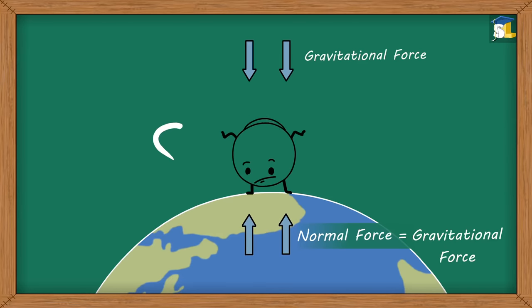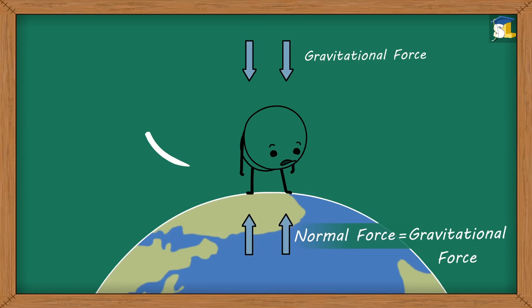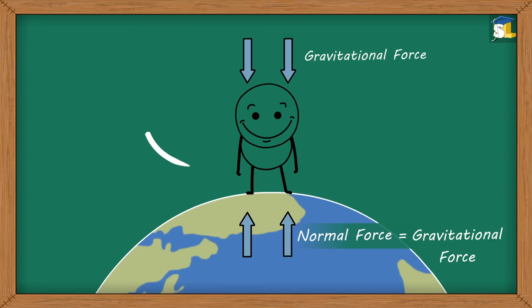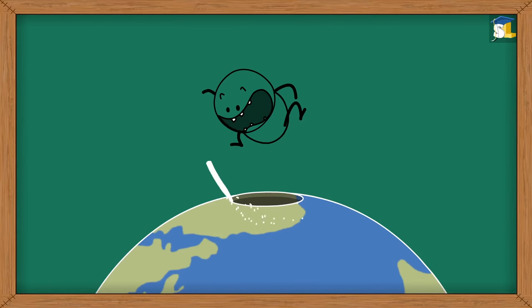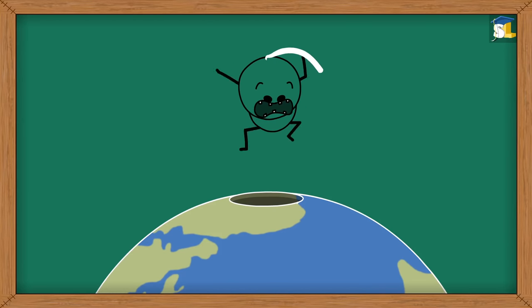Normal force is exerted by a surface only when we are in contact with it. Since these two forces acting on us are equal but opposite to each other, their resultant, that is, net force, is zero. Thus, these balanced forces keep us from falling into the center of the Earth.